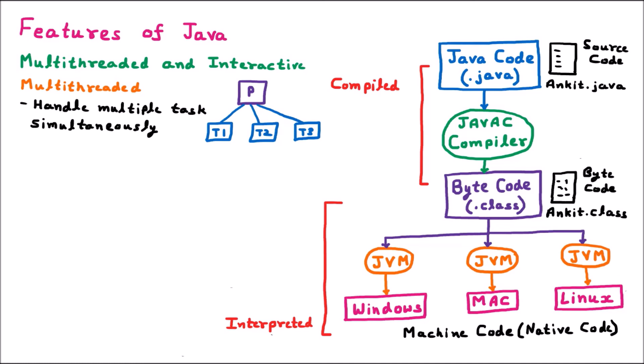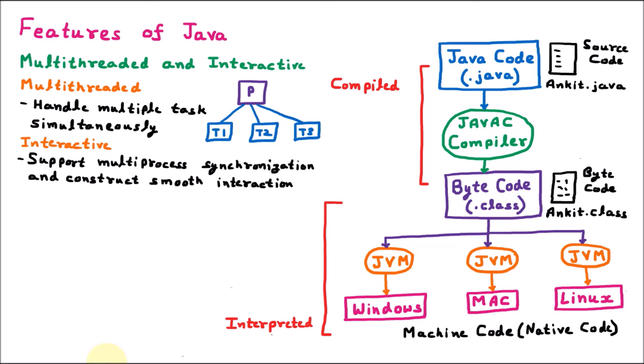In Java, interactivity comes from multi-process synchronization, which constructs smooth interaction. If a Java application needs memory, files, user input, or printer access, those are all different processes, and Java can do all of them together with synchronization. So the user doesn't have to wait — it is very interactive for the user. User can work easily with the Java program. That's why Java programs are interactive.